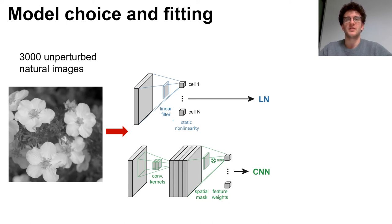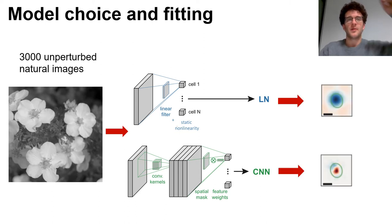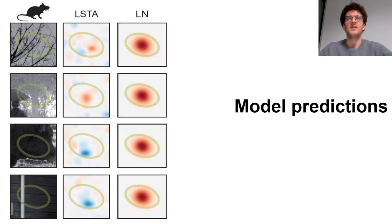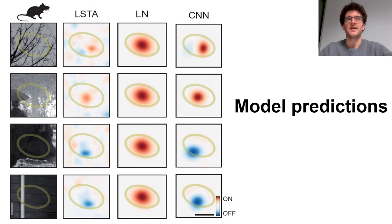And then, for each natural image, we calculated the gradient of these two models and we computed it around the image to obtain a prediction of the local STAs for that image. Note that the images on which the models were trained did not have perturbations on them. If we compare the two models' results with the experimentally measured local STAs shown here, we can see that the simple LN having only one filter cannot predict the change in polarity in the local STAs. But the CNN instead can and is also effective in predicting the position of the local STAs inside the receptive field. To point out is that the images on which we measured the local STAs experimentally were not in the training set of the models.